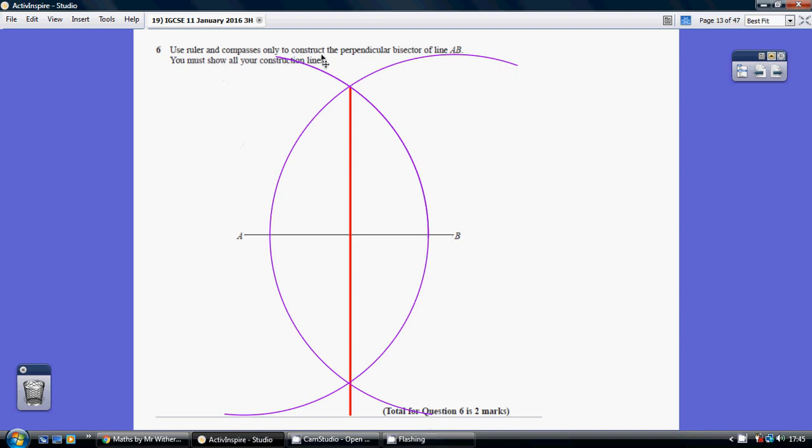They are our construction lines which we need to show, but our final answer is this red line straight down here which has gone through where the construction lines cross here and here. This final answer, this red line, is two things: it is at 90 degrees and it is halfway along A and B.